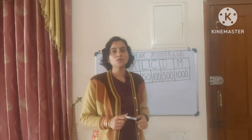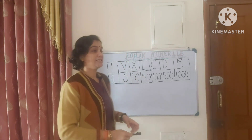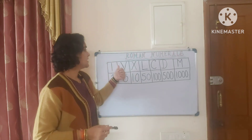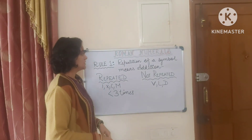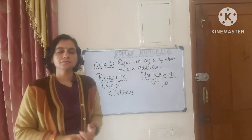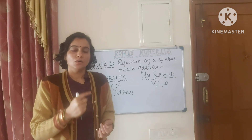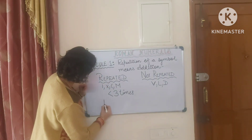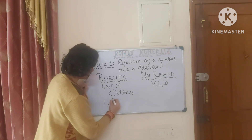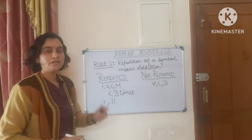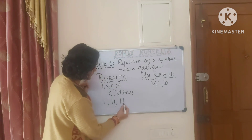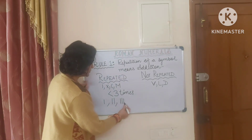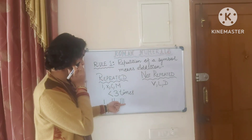Now we will look at the rules — how these numbers are formed using these symbols. Rule 1: repeating of symbols means addition. That means if we repeat a symbol, we add those values. For example, I is 1; writing I I means 2, because the symbol is repeated twice. Writing I I I means adding 1 three times, so it is 3. The value of III is 3.